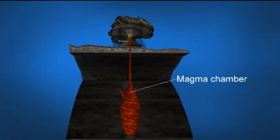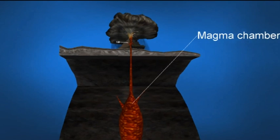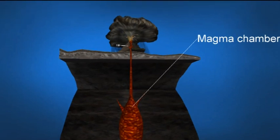Magma chamber: a magma chamber is a large underground pool of molten rock sitting underneath the Earth's crust.